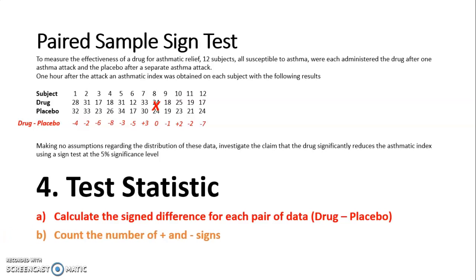Then I count the number of positive and negative signs. So looking at my data values there, if I just see the signs I've got, I've got 2 positives and 9 negatives.